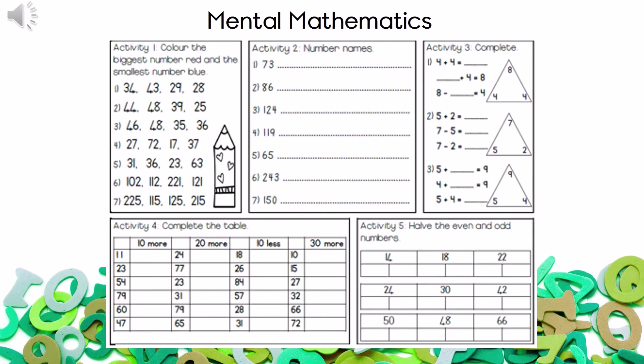Now go and complete the whole table. Activity five: you must halve the number they give you. So in the first one, they give me 14. Underneath 14 I would write a 7 and a 7, because 7 plus 7 will give me 14.